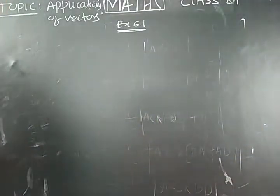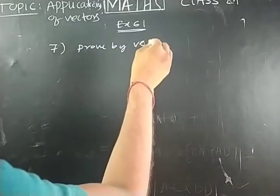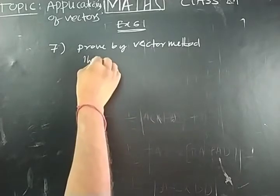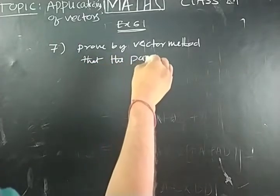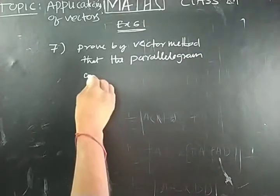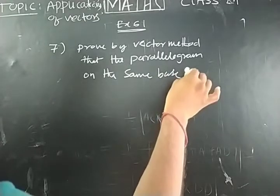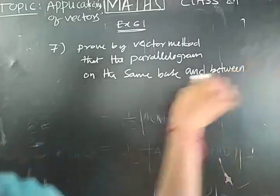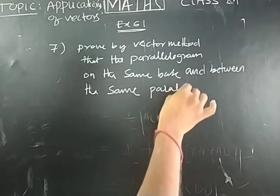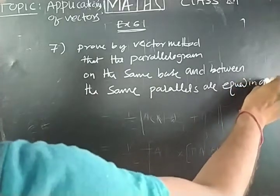Now seventh problem. Prove by vector method that the parallelograms on the same base and between the same parallels are equal in area.